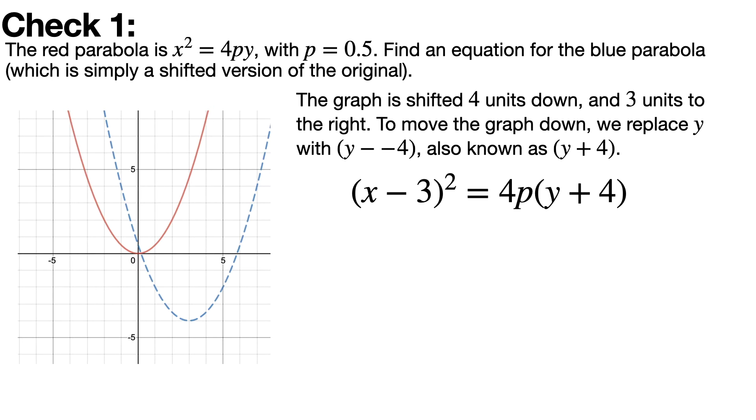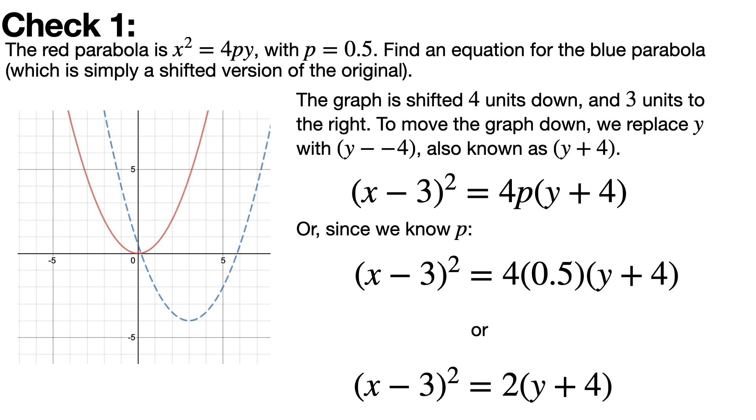So we can think of it as replacing y with (y - (-4)), or by replacing y with (y+4). To move it to the right, we replace x with (x-3). And this is basically the answer. You could also replace p with a value of 0.5 or simplify it. But we're just shifting by replacing x and y with (x-3) and (y+4) in this case.